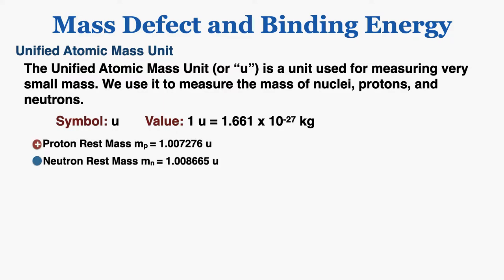This is the mass of a proton and a neutron in atomic mass units, and this is what they would be in kilograms, but I'm going to focus on atomic mass units for now.